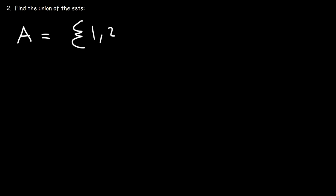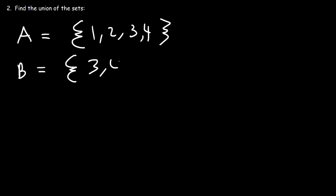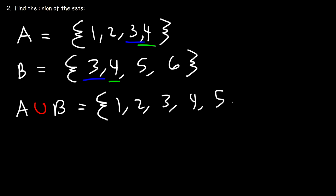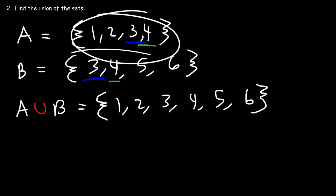Now let's focus on the second type of problem — finding the union of two sets. Let's say that set A contains the elements 1, 2, 3, and 4, and set B contains the elements 3, 4, 5, and 6. When I think of union, I think of combining these into a larger set. Notice that we do have some common numbers: 3 and 4. The union will contain everything in both sets, but 3 and 4 we're not going to write twice, only once. So the union of sets A and B is going to be 1, 2, 3, 4, 5, and 6.